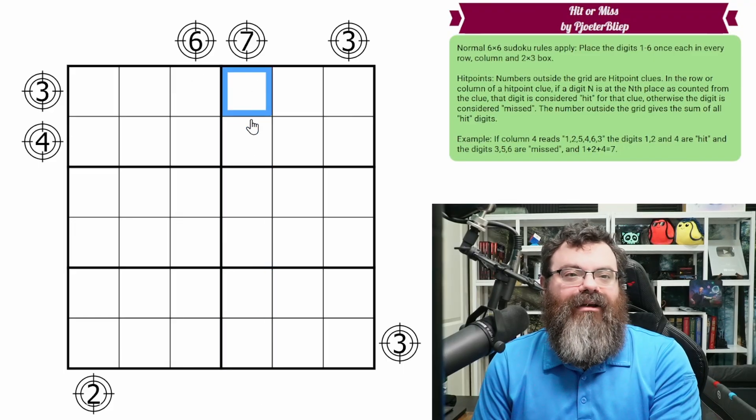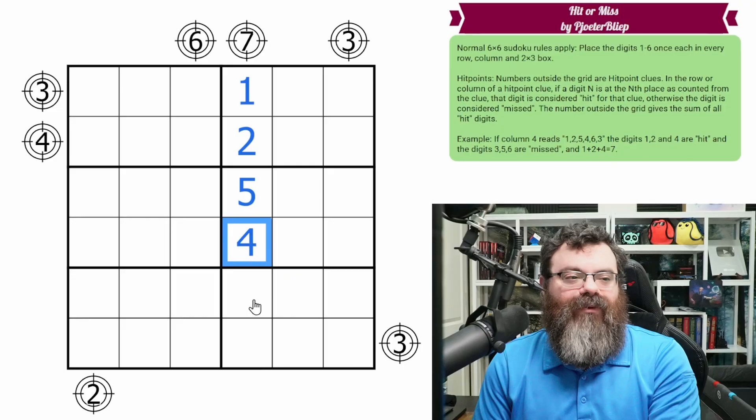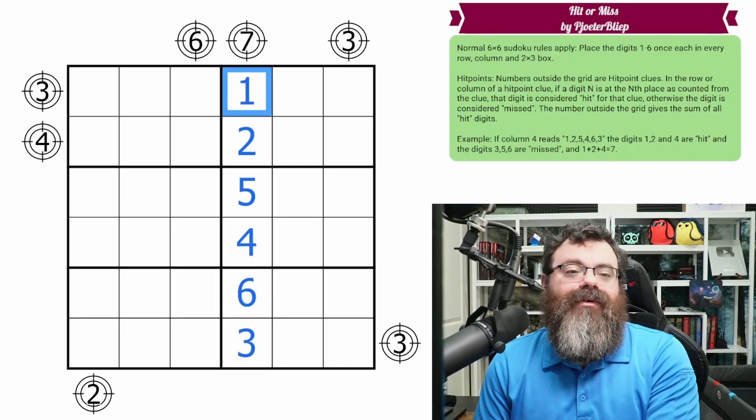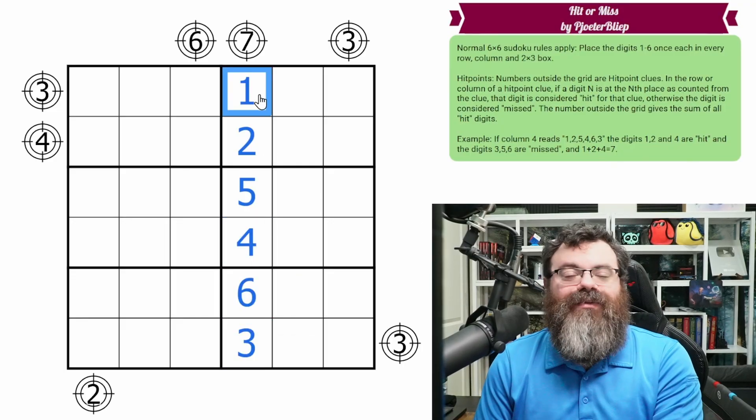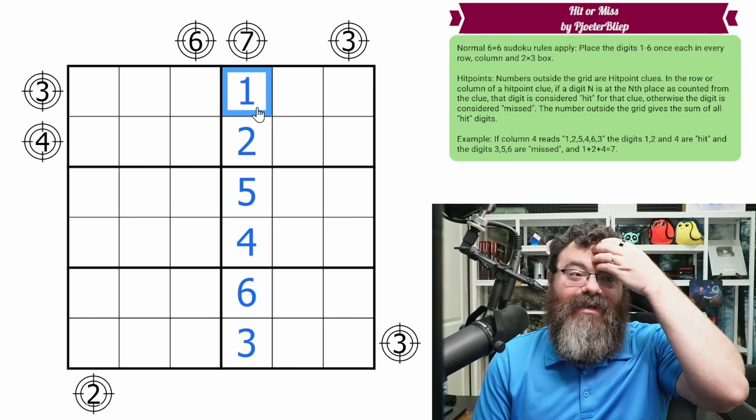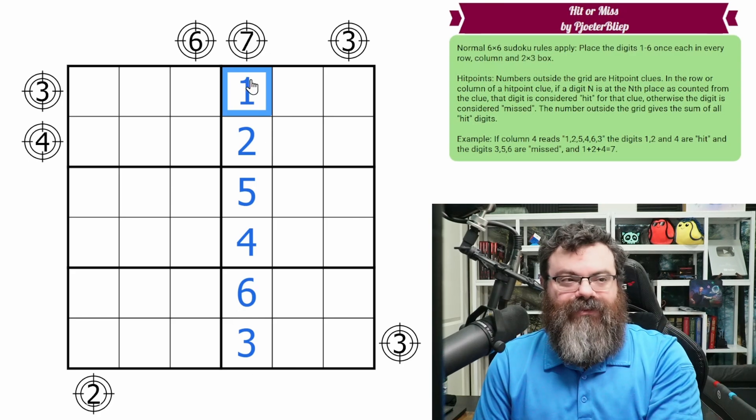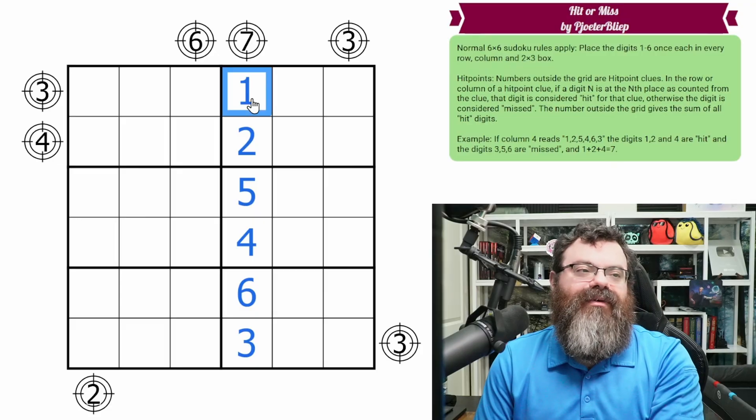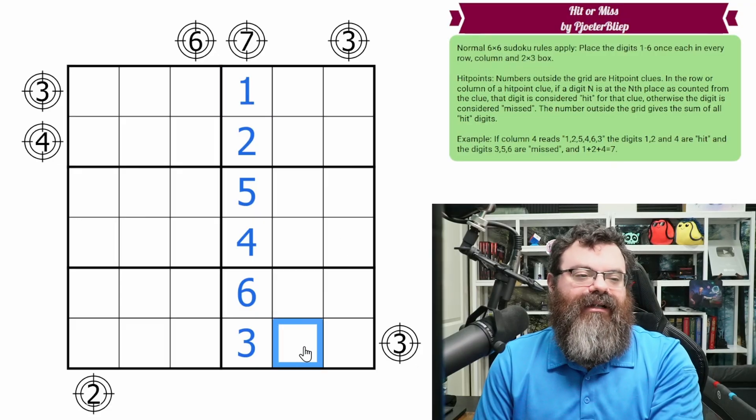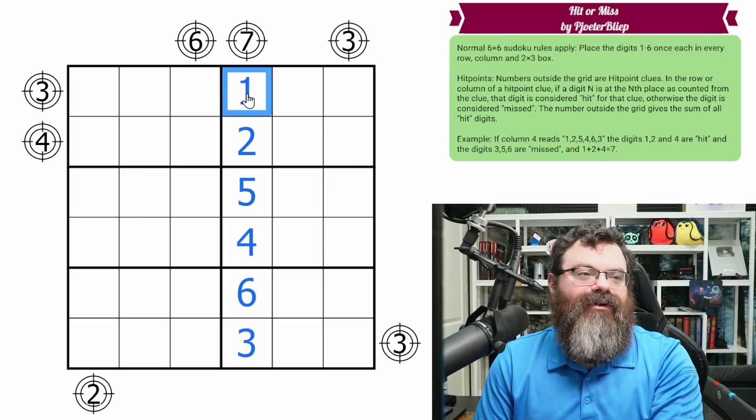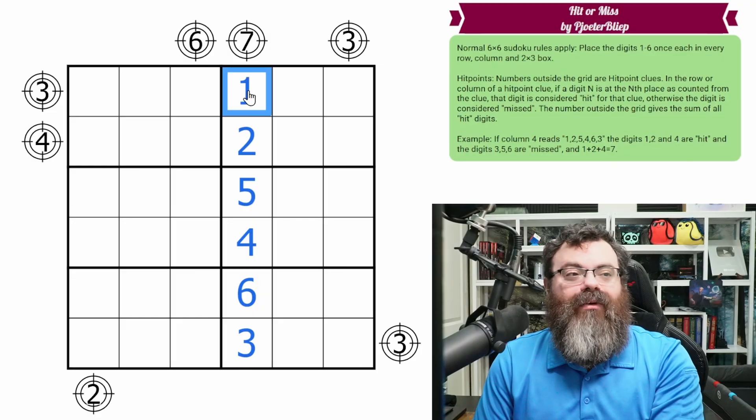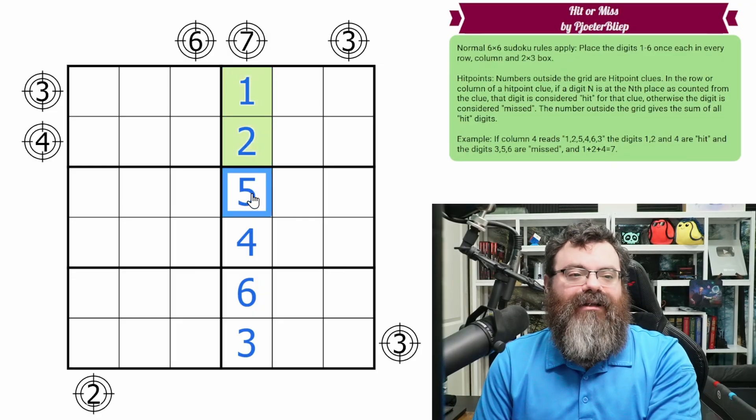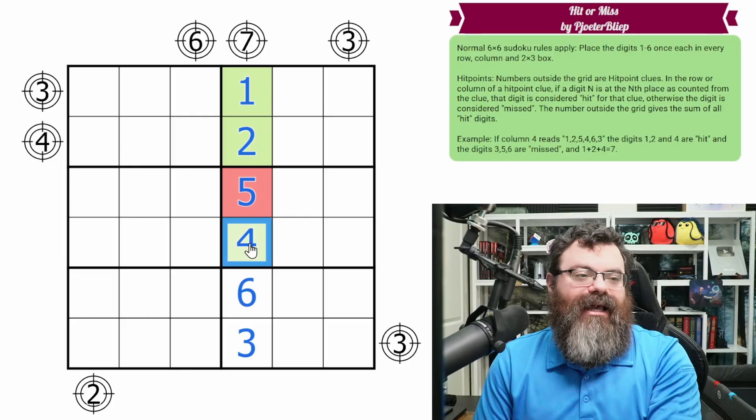Let's go over the example that's given here. So if column four read 1, 2, 5, 4, 4, 6, 3, what we're going to do is we're going to say we have a hit, which I'm going to mark green, if as we count down it matches our count. So I'm going to start counting with one. You always count from where the clue is. This three would start from here, it's not based on the column number or anything. So starting here, we're going to count one that matches, two matches, five doesn't match, four matches.